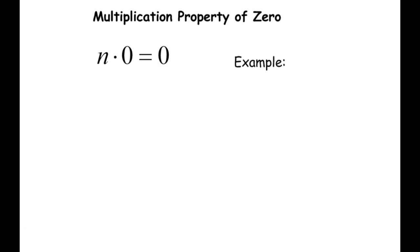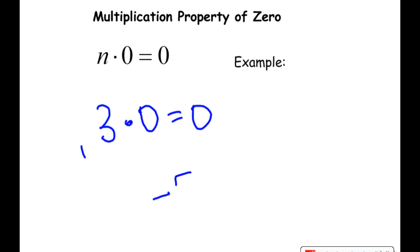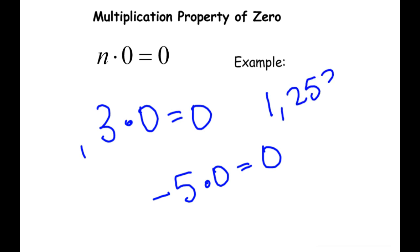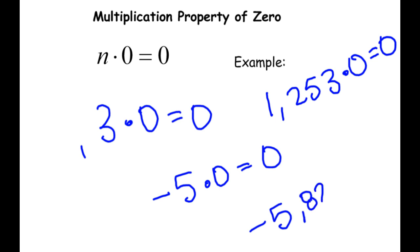Multiplication property of zero — you've known this since third grade. Any number times 0 is always 0, no matter what the number is. 3 times 0 is 0. Negative 5 times 0 is 0. 1,253 times 0 is still 0. Negative 5,820 times 0 is still 0. Any number times 0 will always be 0 — always, always, always.